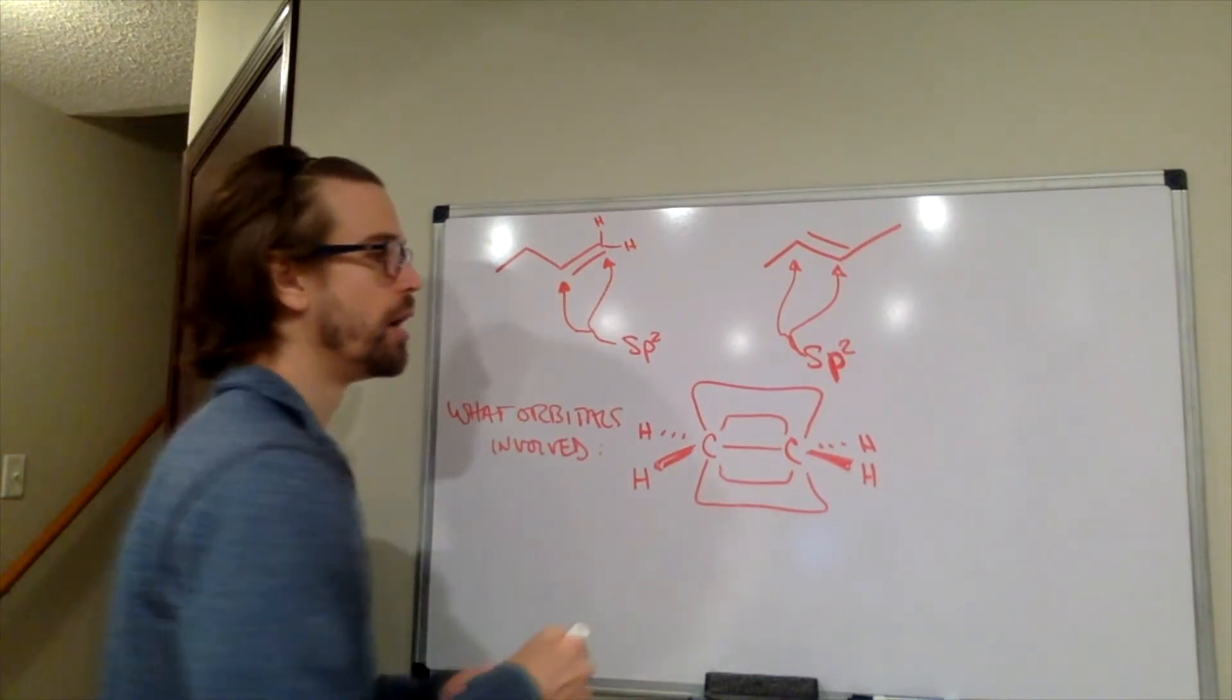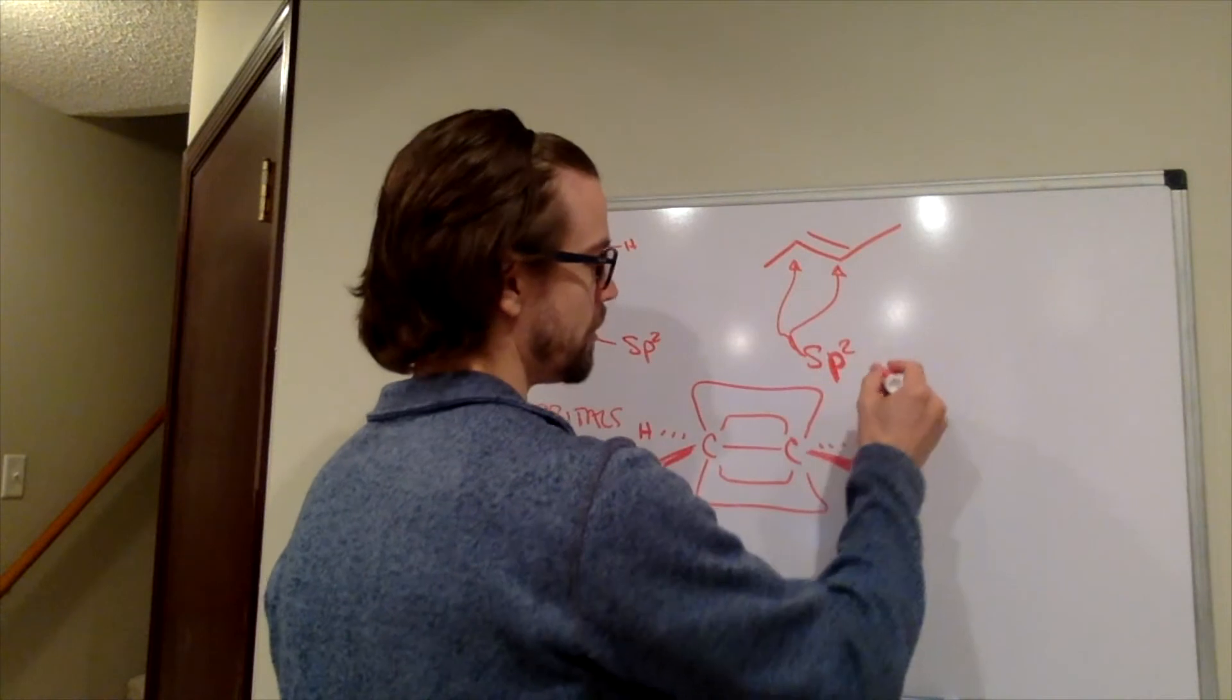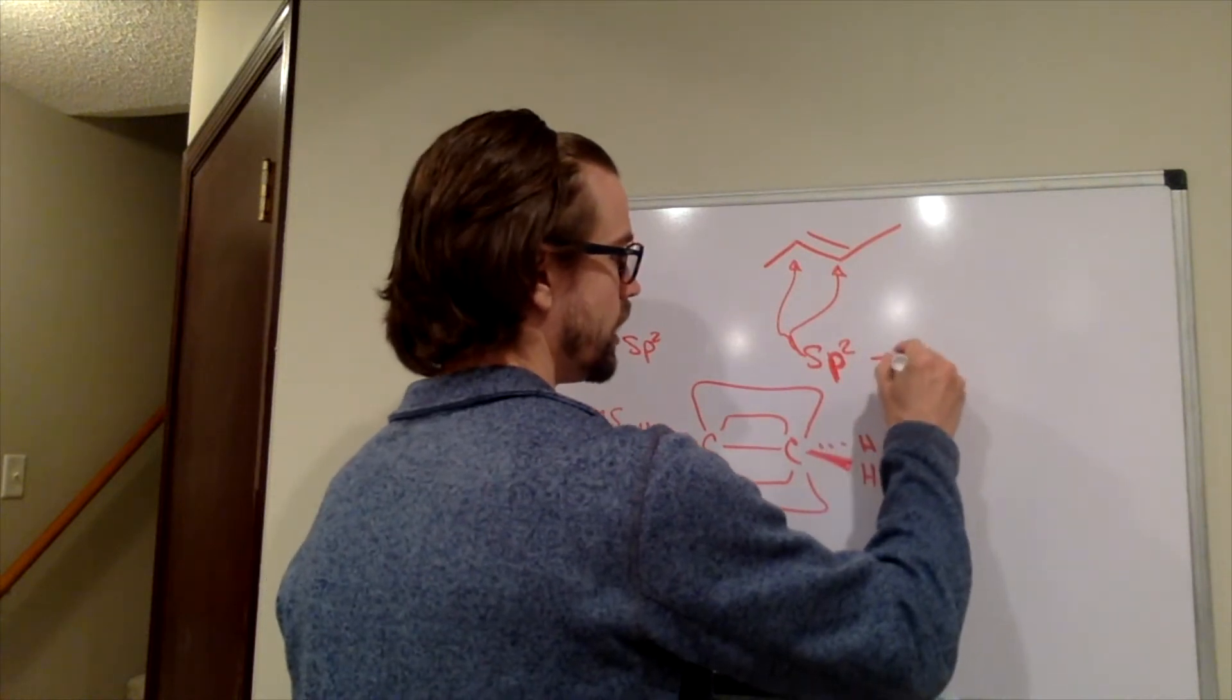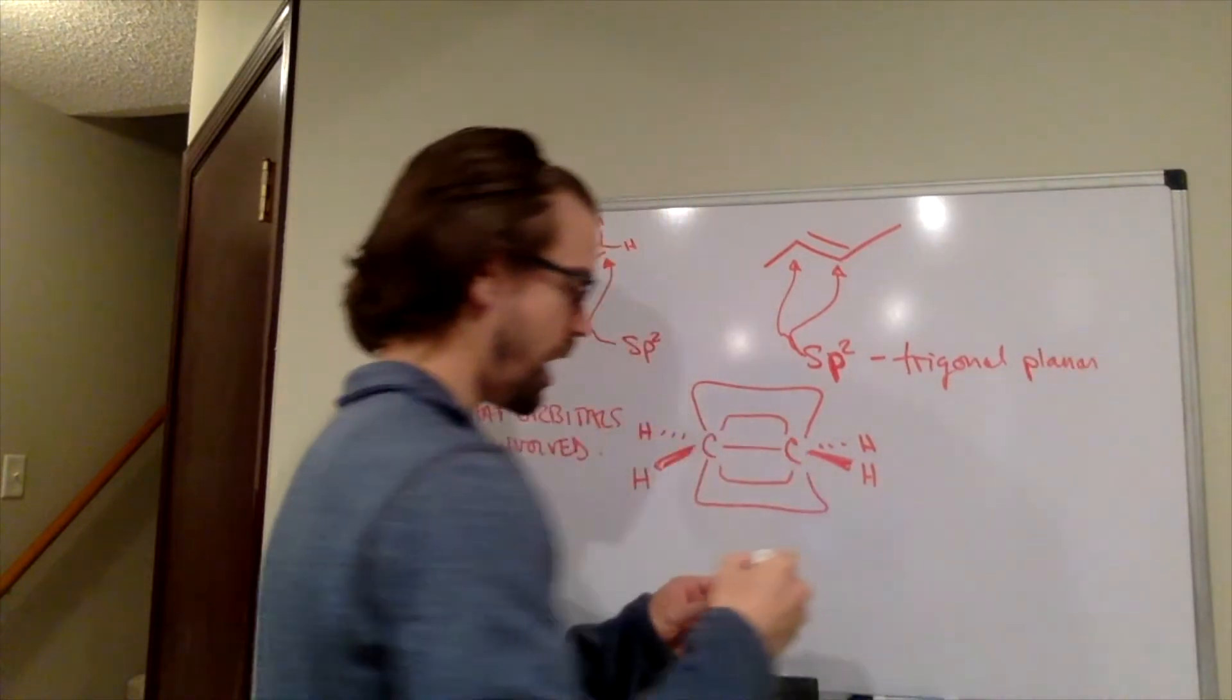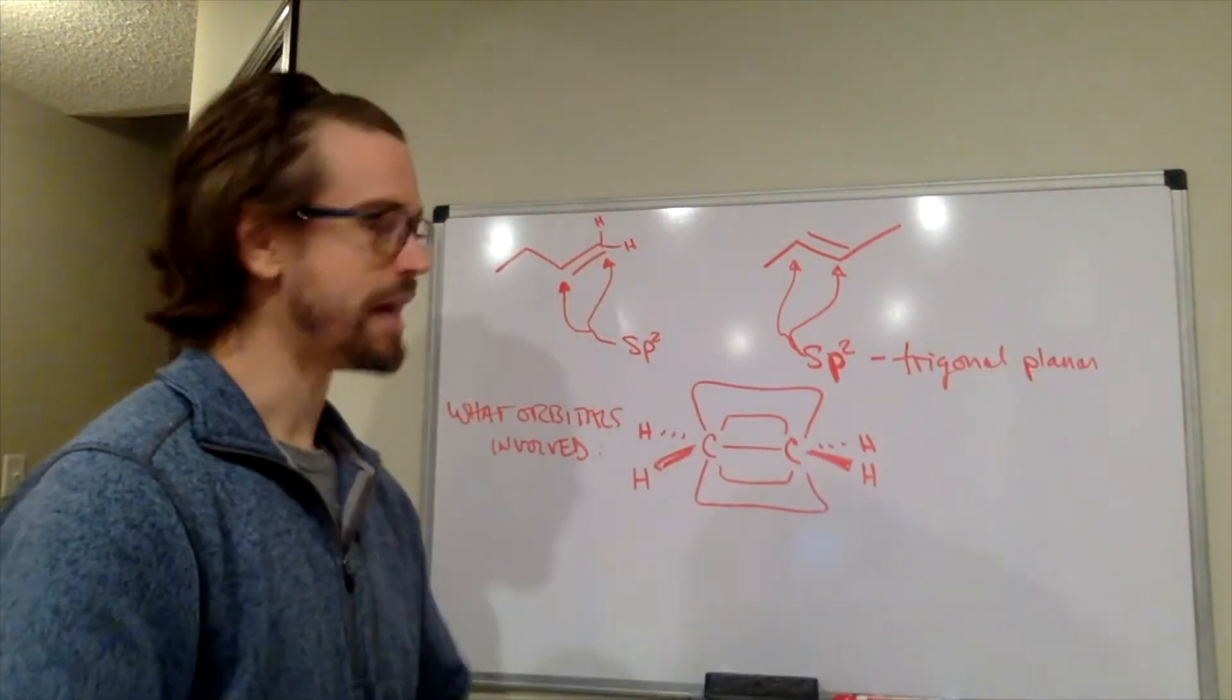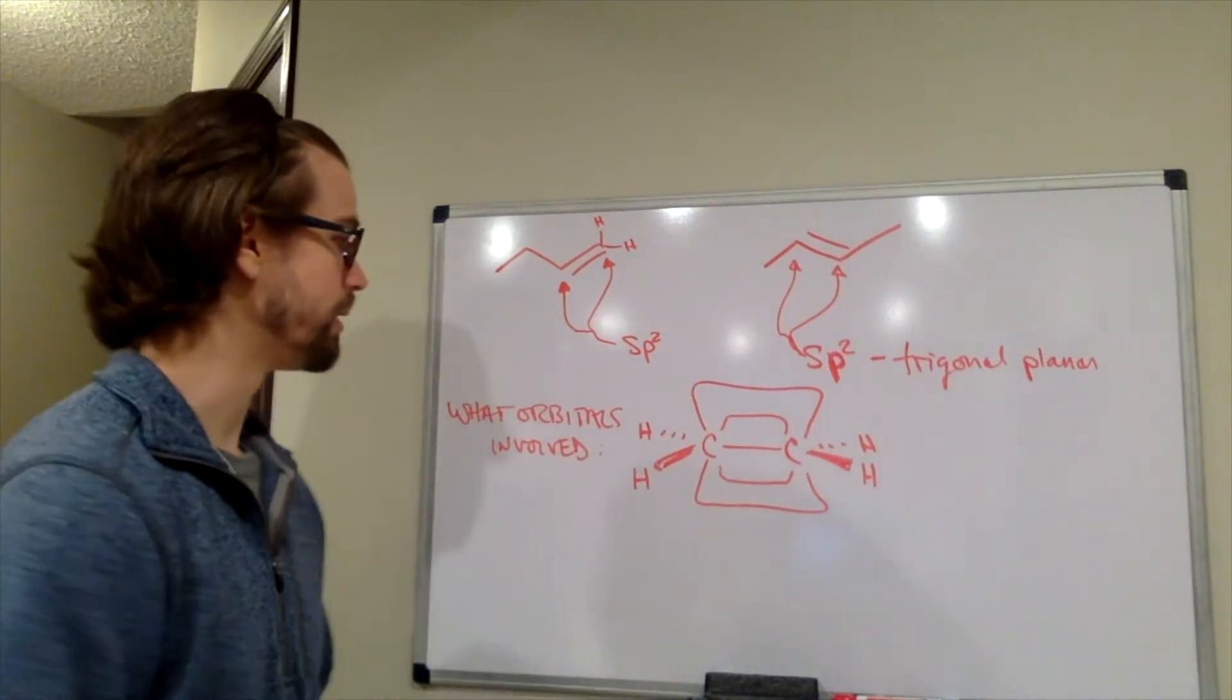What is their geometry then? Pause the video. You decided any alkene is going to have an sp2 hybridization and a trigonal planar geometry. So that's talking about the geometry of the atoms of the alkene.